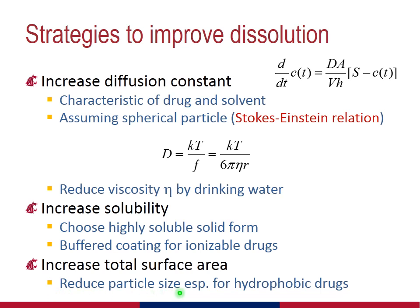A third strategy is to increase the total surface area of the solid particles — in other words, to maximize the value of A. This can be done easily by reducing the particle sizes of the individual particles and therefore increasing the sum of the surface areas for all of the particles. This strategy works for all drugs, regardless of their ionizability, and is particularly important for hydrophobic compounds for which solubility in water may be extremely limited.